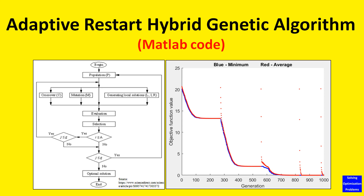In this video, first I will demonstrate the capability of the genetic algorithm in solving an optimization problem with 60 variables, and then I will show you the MATLAB code of the genetic algorithm. If you want, you can copy the MATLAB code and customize it to solve your own problems. Let's get started.